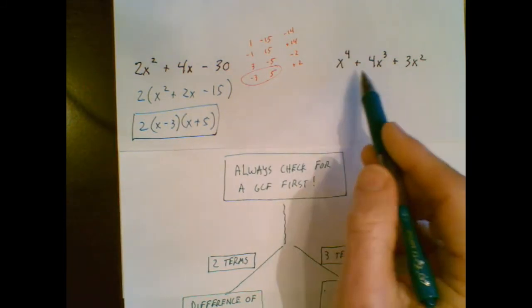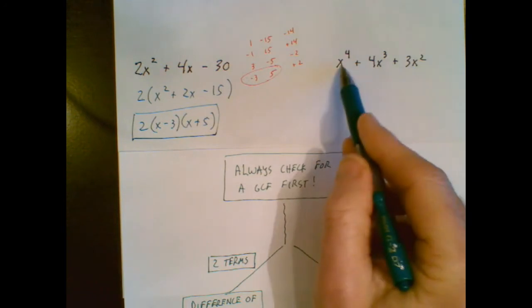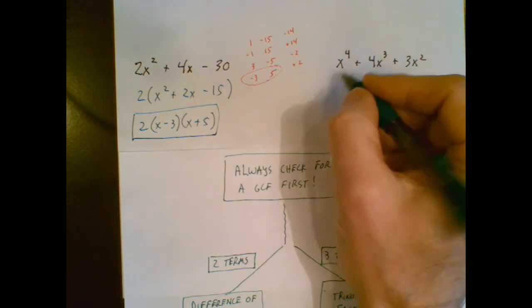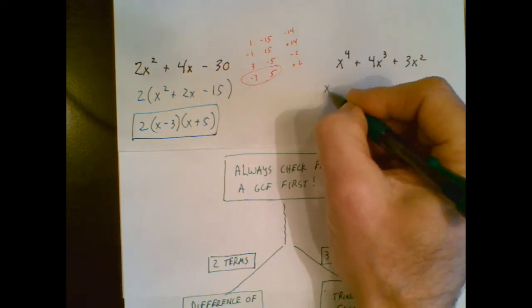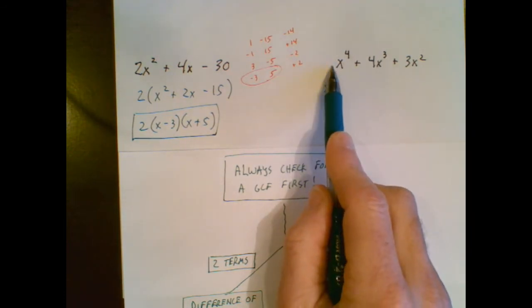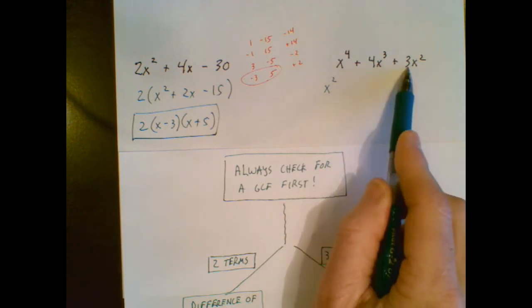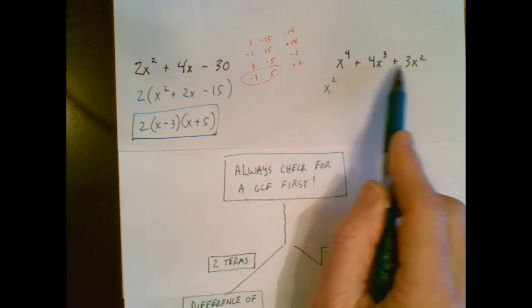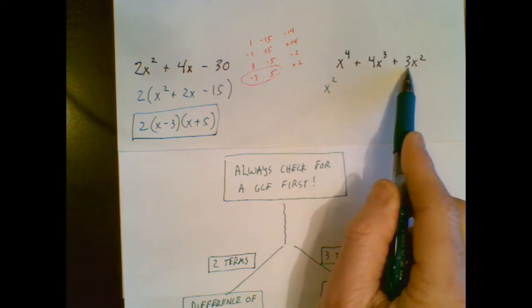Final example. Three terms, but they all have a variable. That means in my GCF, I will have an x squared. Now I think about the coefficient part. There's a 1, a 4, and a 3. There's no number other than 1 that multiplies or divides evenly into 1, 4, and 3.